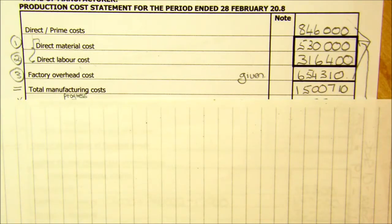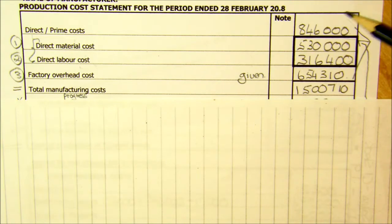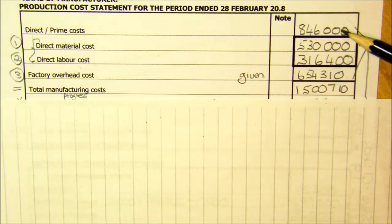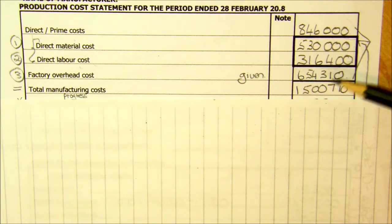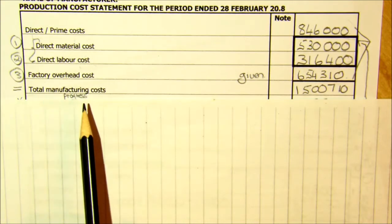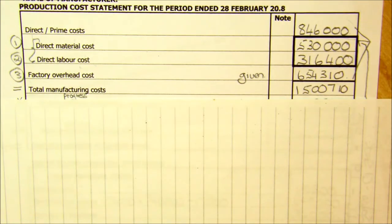Grade 12, and this is the fourth lesson on the production cost statement. We are now going to complete the statement. Remember, we got as far as getting the prime costs, the direct costs, we worked at the factory overheads, and we got our total manufacturing costs for the year. But following the exact same principles, some of these goods might not have been completed, and we want to sell them — and we can only sell finished goods.